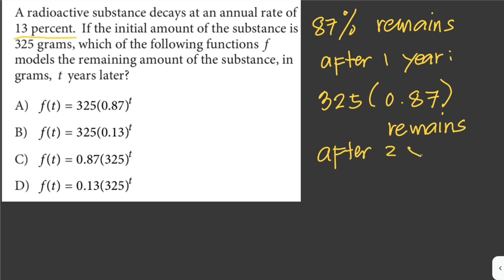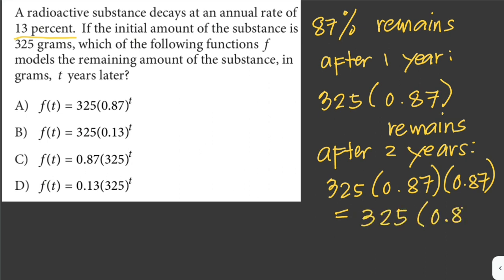After two years, that would be 325 times 87% of that, and then 87% of what remained after one year. Or we can write this as 325 times 0.87 squared as a function, exponential function.